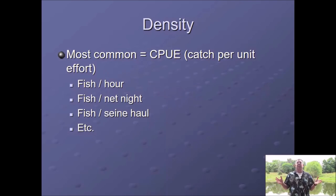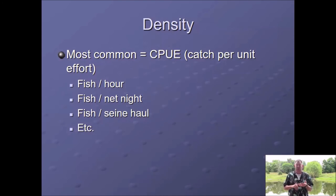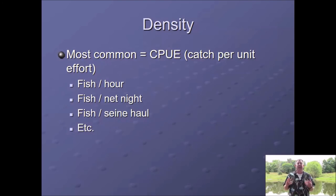Probably the most common way that we look at density is CPUE, or catch per unit of effort. We've talked about this when we discussed sampling gears — we always need to measure our effort so we can standardize things and look at the catch of our fish per unit of effort. So we're talking about fish per hour, fish per net night, or fish per seine haul. The idea is that if you have a higher density, then you've got a higher CPUE.